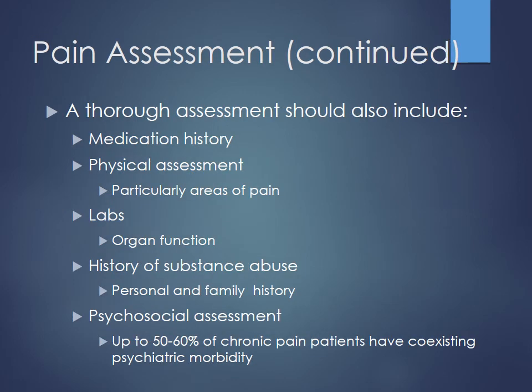Also assess medication history, including self-medication with legal or illegal drugs, as these could be impacting their pain. Physical assessments, labs, and history of substance abuse — personal or family — are important, as there are genetic links to addiction risk. A psychosocial assessment is also valuable; pain can be related to depression, and if you treat the depression, the pain may become more manageable.